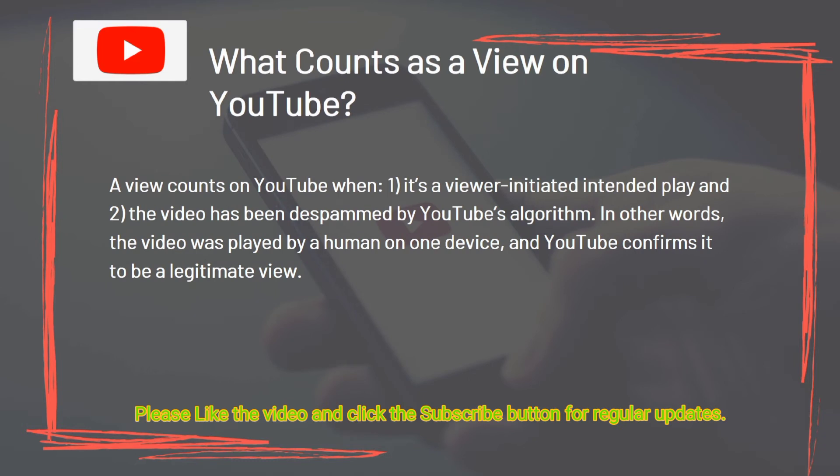What counts as a view on YouTube? A view counts on YouTube when: one, it's a viewer-initiated, intended play; and two, the video has been de-spammed by YouTube's algorithm. In other words, the video was played by a human on one device and YouTube confirms it to be a legitimate view.